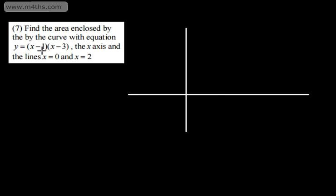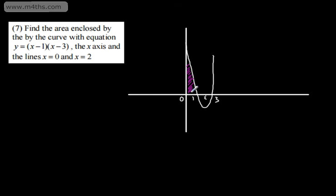As suggested in the last video, a quick sketch. This is a positive quadratic equation with points of intersection at x = 1 and x = 3. We sketch it coming through those points, with the origin and the region of interest visible. This is a critical value because at x = 1 it crosses the x-axis, so we're going to have two different areas.